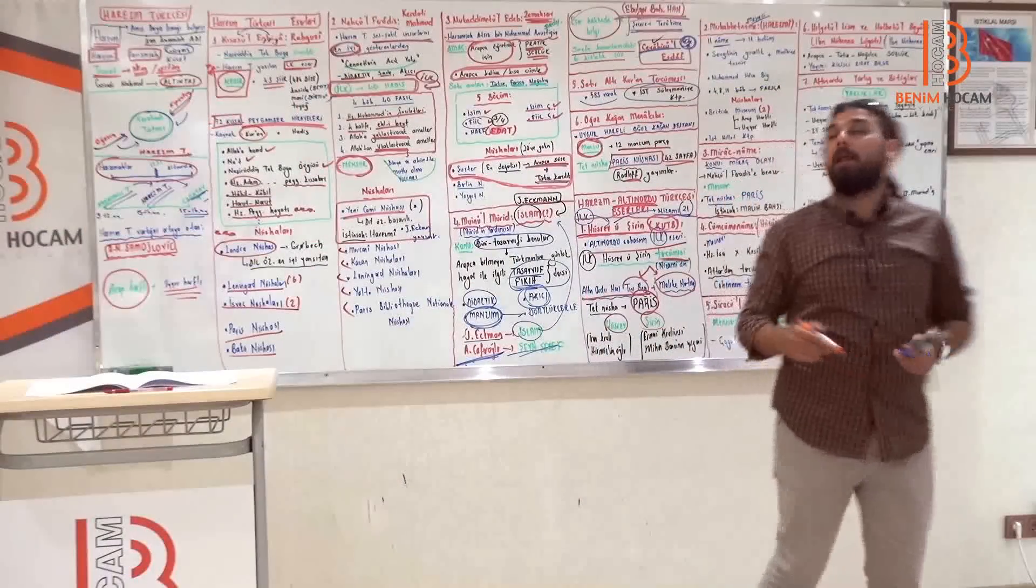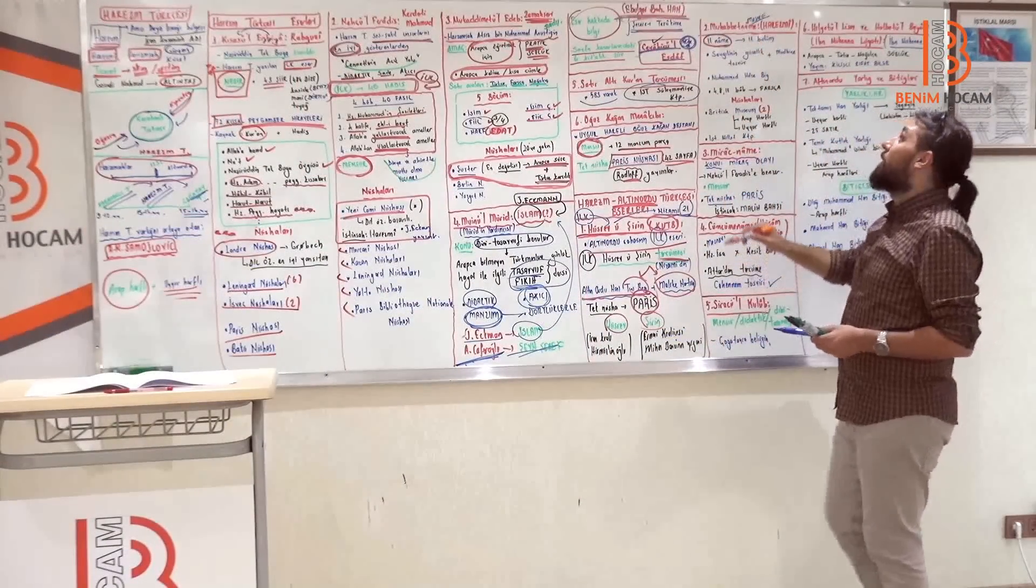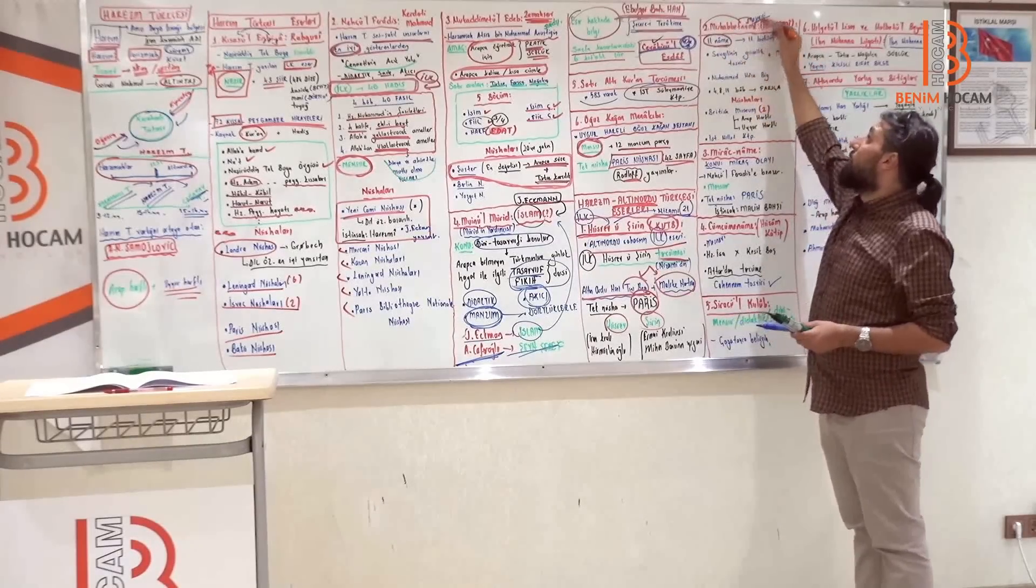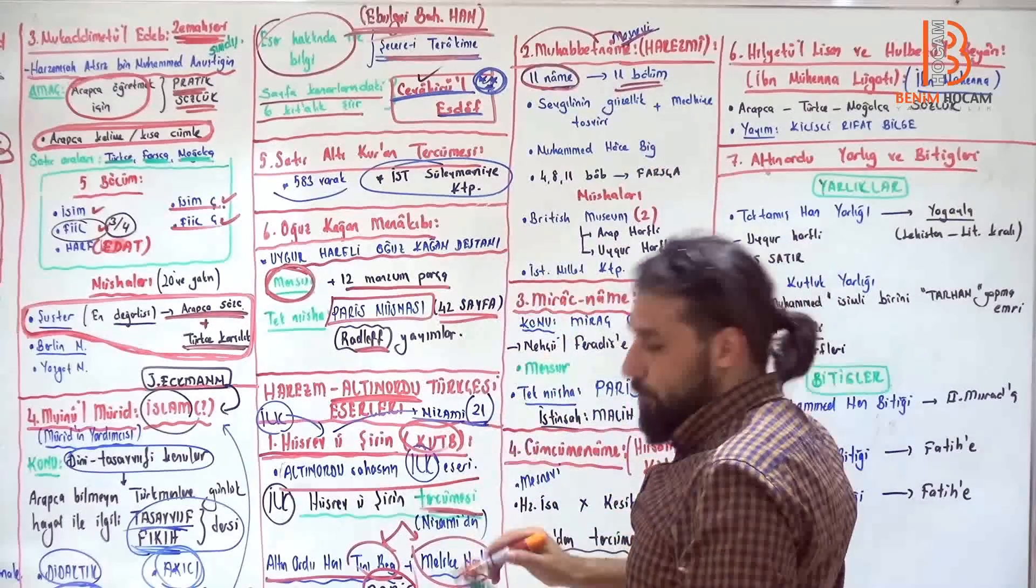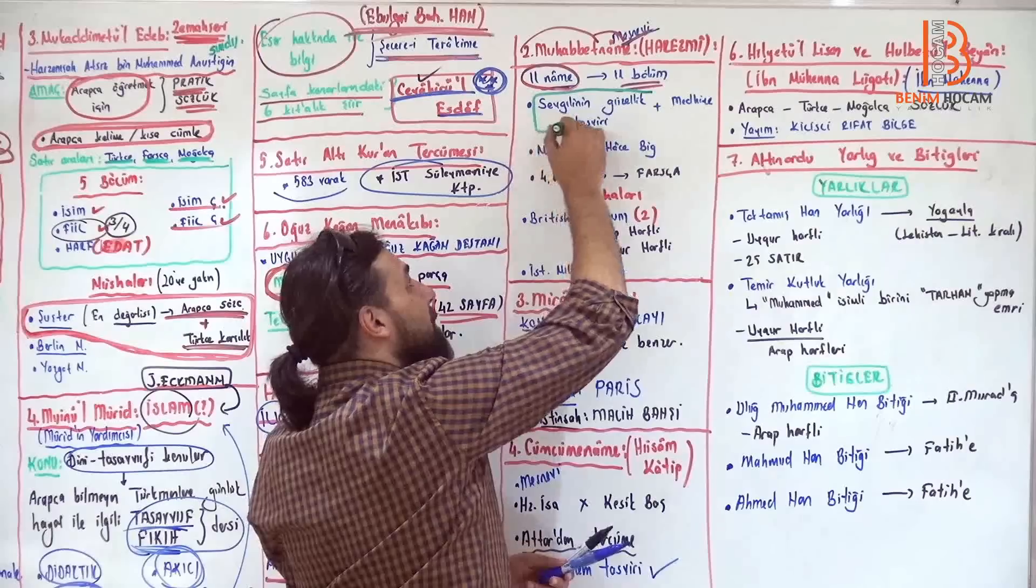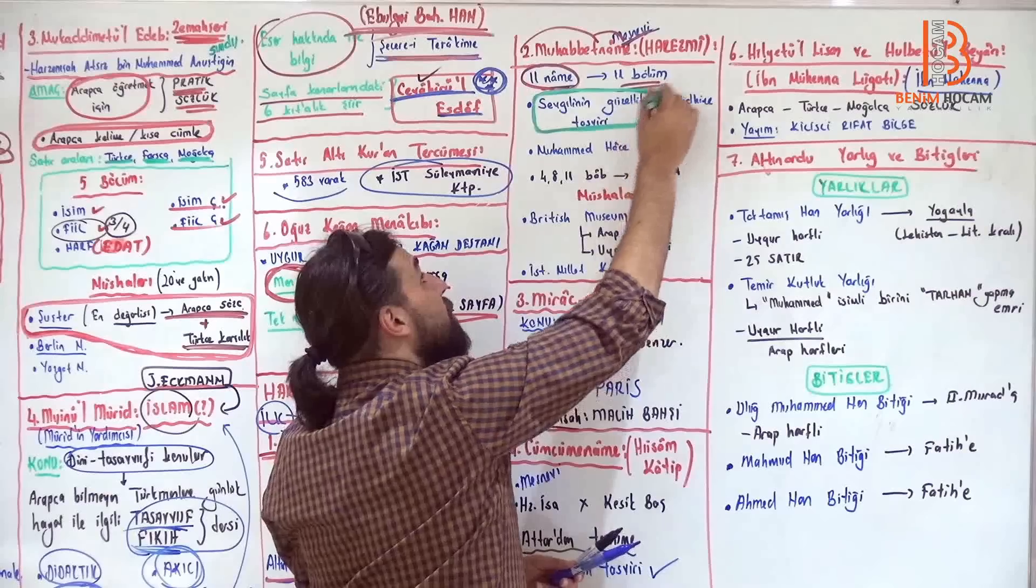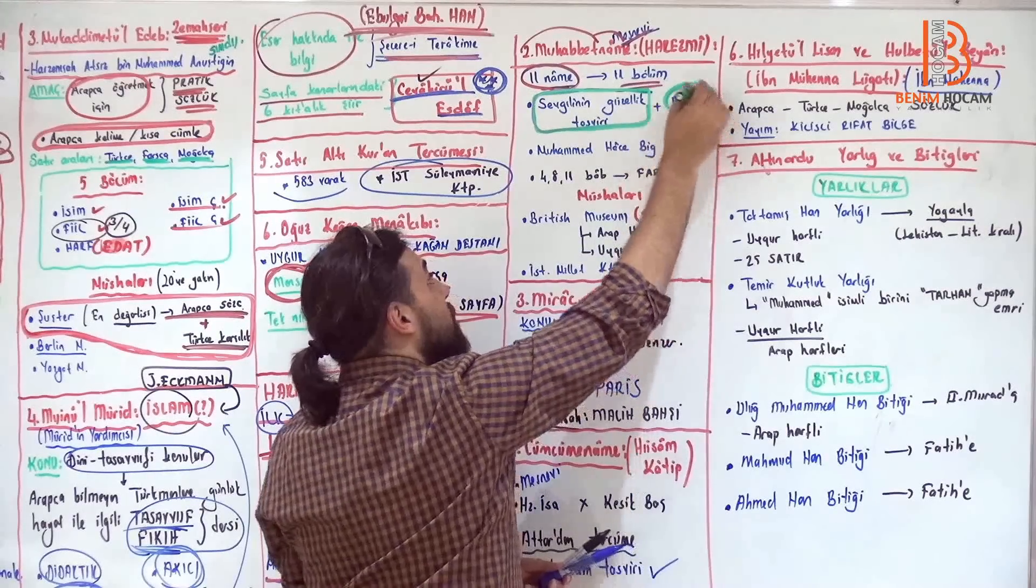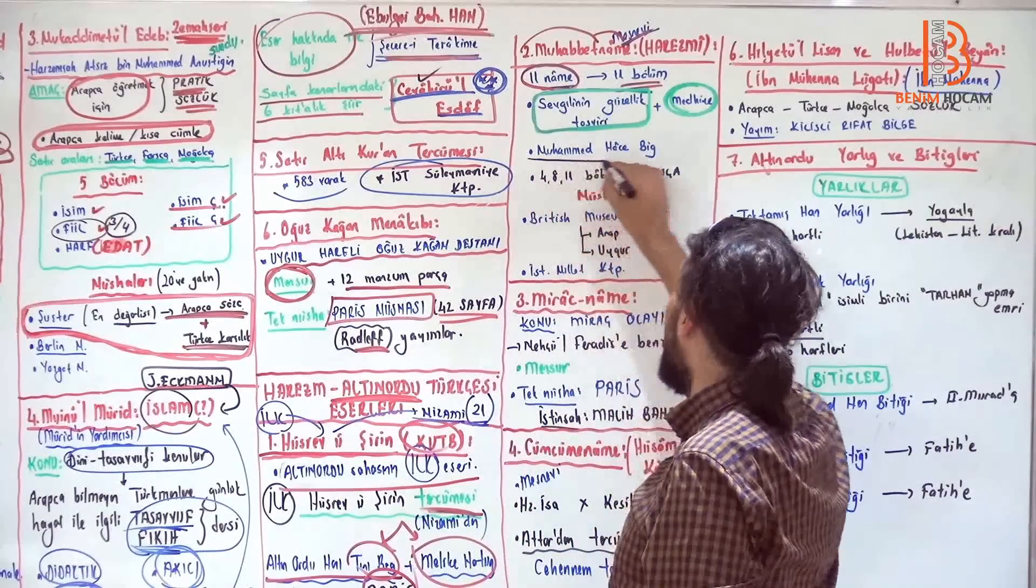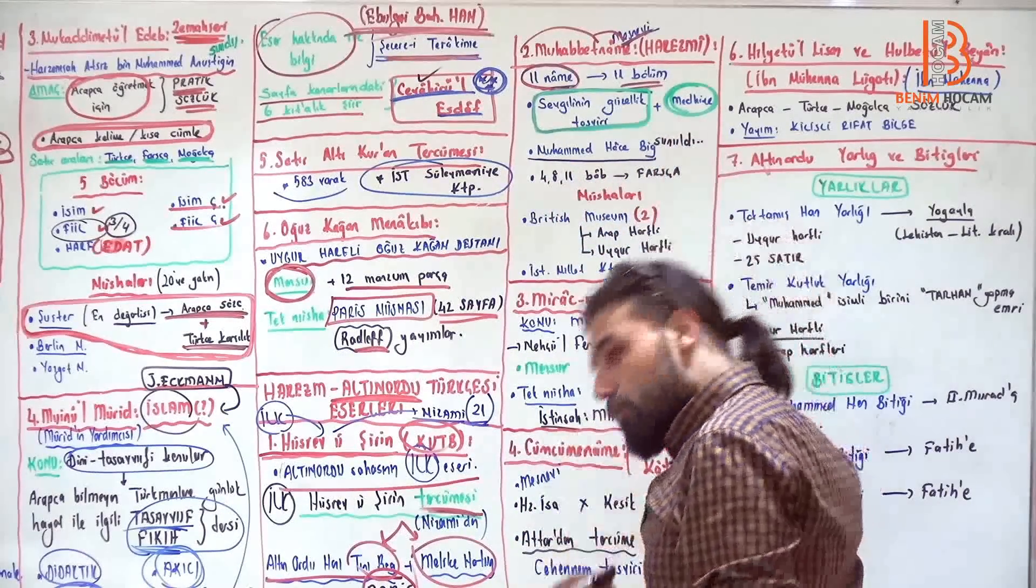Muhabbetname. Hareizmi'nin yazdığı Muhabbetname 11 name'dir. Yani 11 mektuptur. Aşk mektubu olarak düşün. Bak muhabbet, aşk, name, mektup. Mesnevi şeklindedir, 11 bölümdür. Ve kendine yakışır bir şekilde, ismine yakışır bir şekilde muhabbet aşk demektir. Öyle sohbet etmek değil aşk demektir. Sevgilinin güzellik tasviri ve sevgiliye düzülen metiyeler vardır.